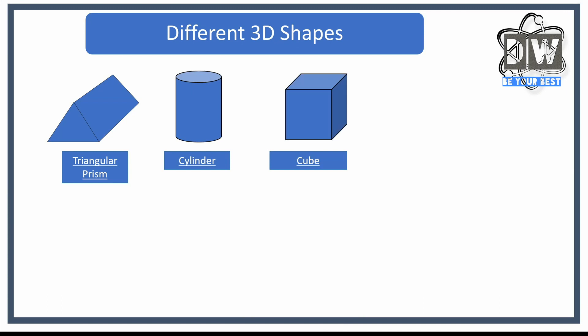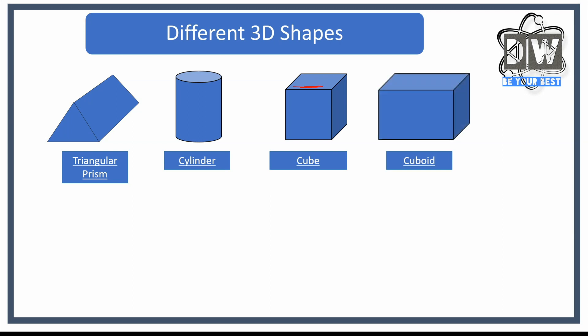A cube is like a square that has equal length sides — a cube has equal length sides. These are actually called edges, and they're all the same length. We also have a name for something that doesn't have all the same length sides — like a rectangular shape but in 3D form, that's called a cuboid. You can see that this side here is actually longer than this side here, and that's why we call that one a cuboid.